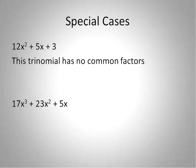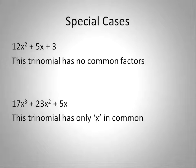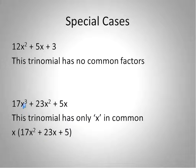The other special case, which you will see quite often, is when you have something like 17x to the power of 3 plus 23x squared plus 5x. There are no common factors between 17, 23, and 5, but there is an x in common. So sometimes you will have variables in common while you have no common coefficients. If that's the case, factor out x just like any other factor: x to the power of 3 becomes x squared, x squared becomes x, and the final x becomes 1, so 5 times 1 gives you 5.